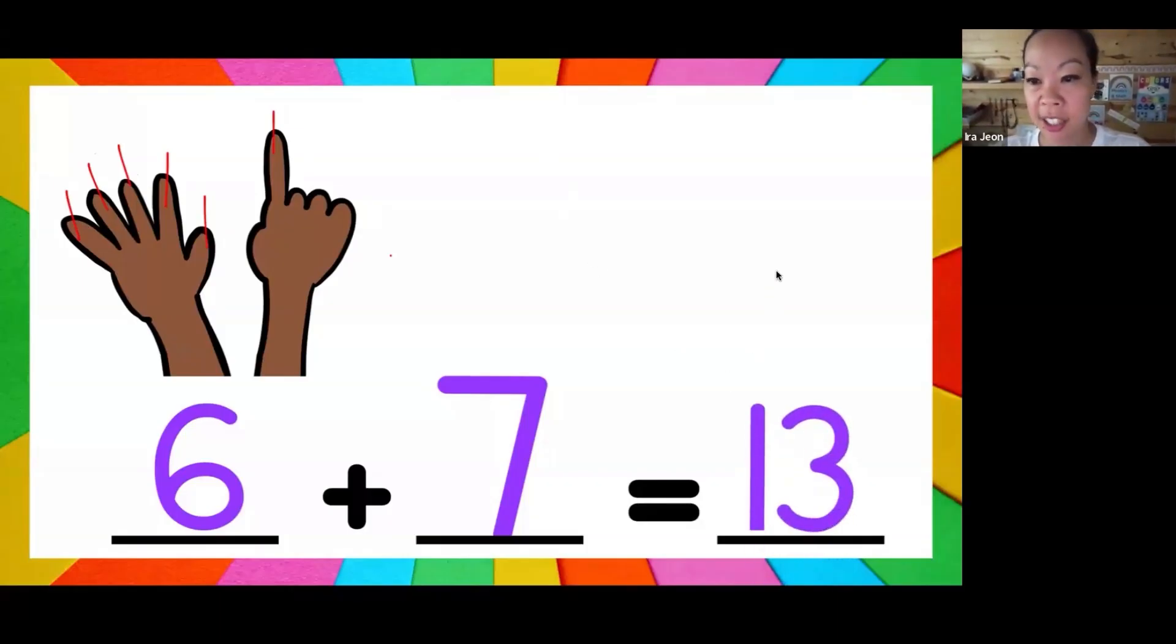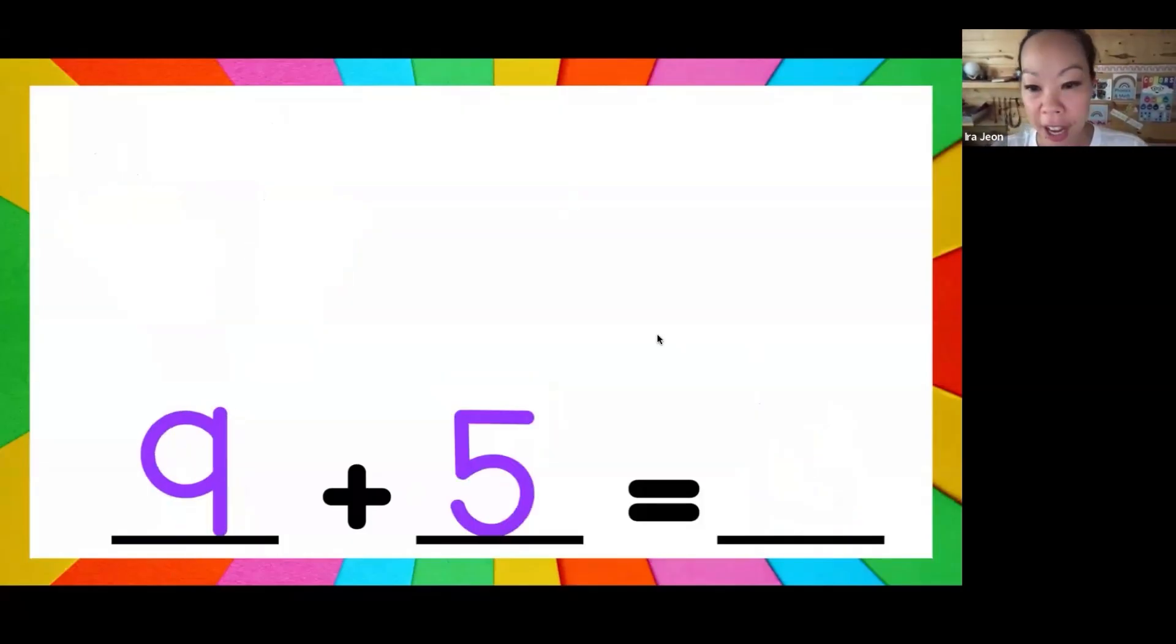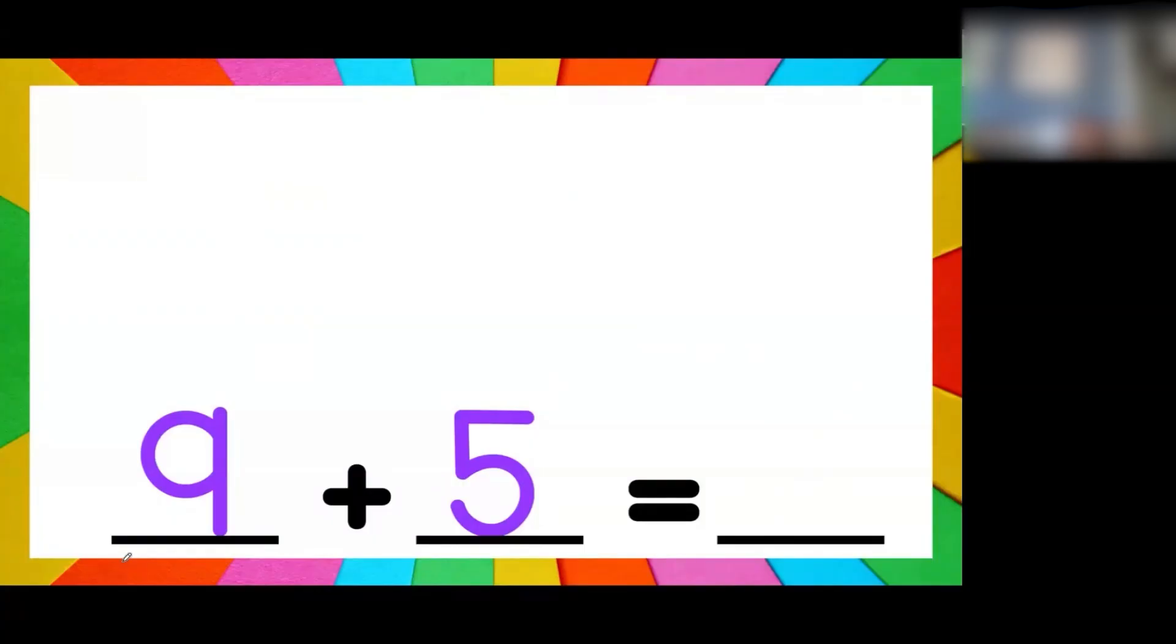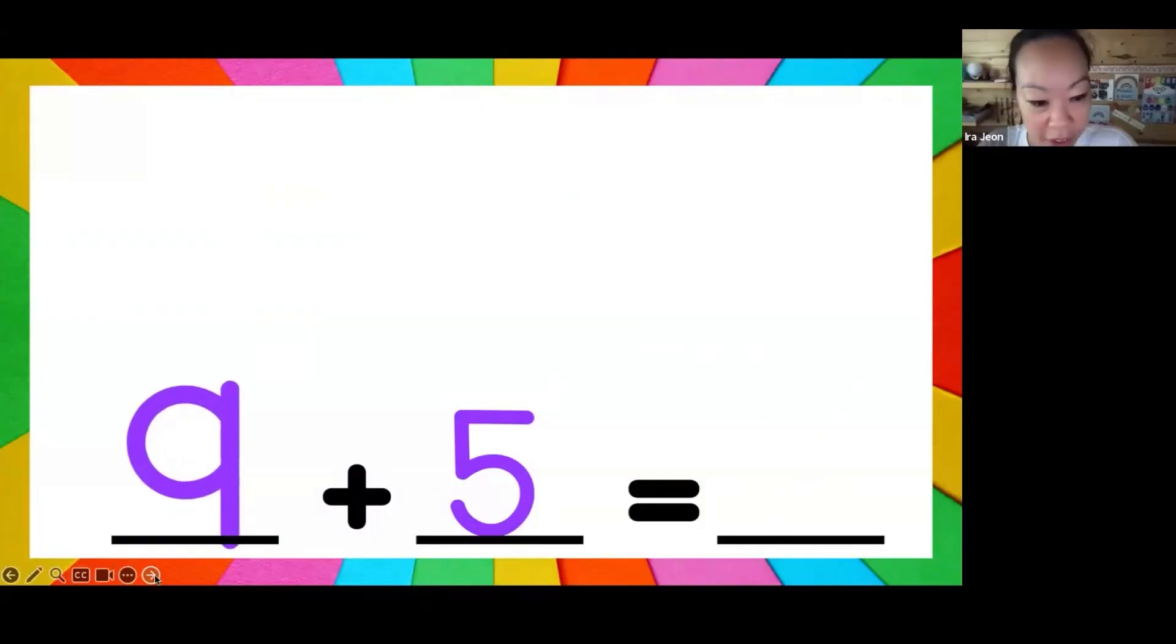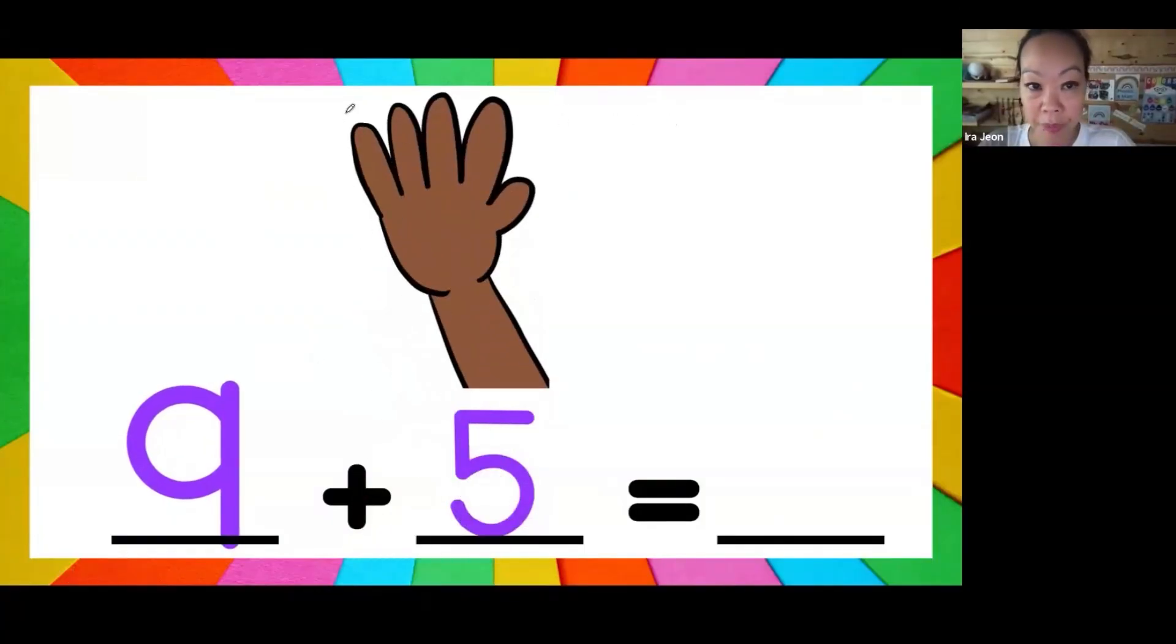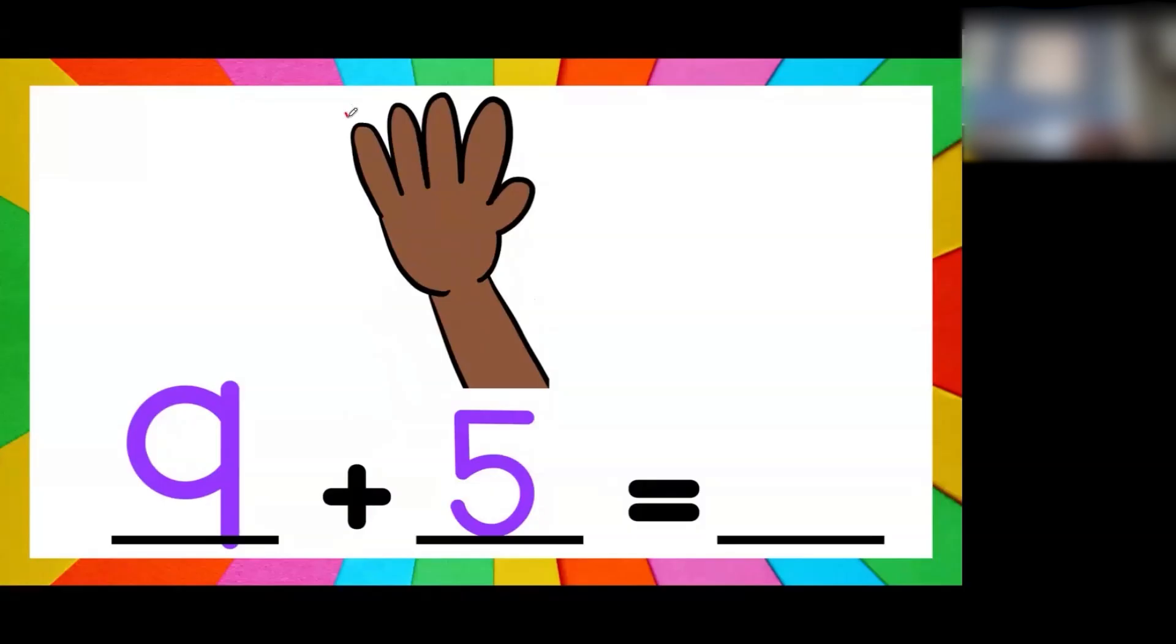This was one of the facts that was hard for Miss Ira when I was you guys's age, so I just memorized it: 6 plus 7 is 13. Okay, let's try another one. If I have 9 plus 5, Tristan, can you tell me what number I will count on from? Nine, good, nine is bigger, right? Then what are you gonna do? Think nine in your head, good, keep counting: nine, ten...